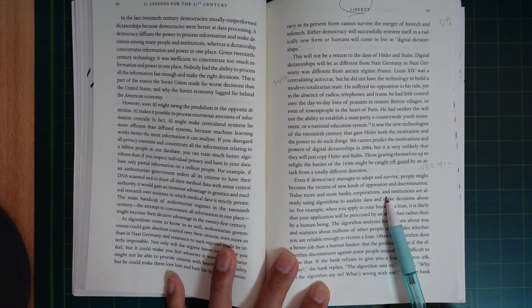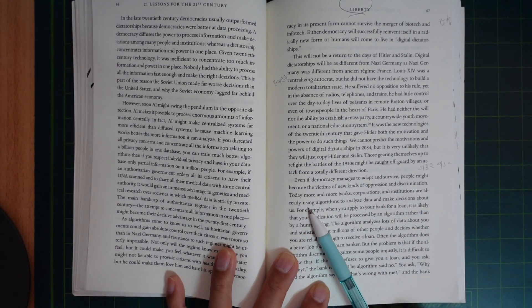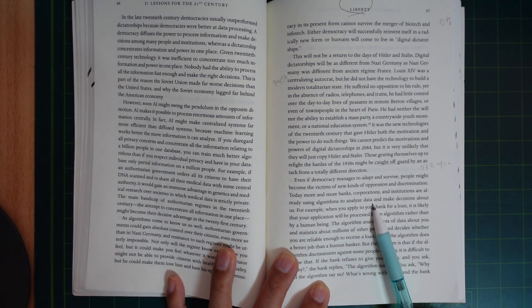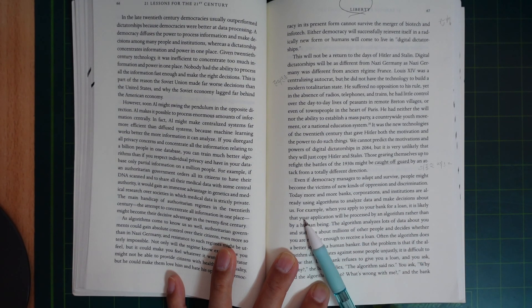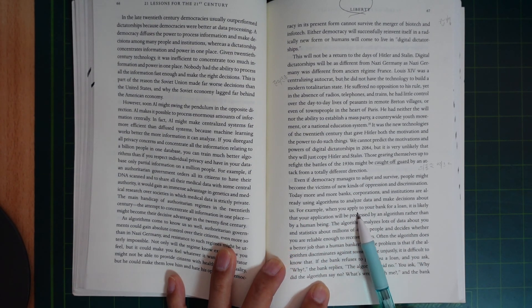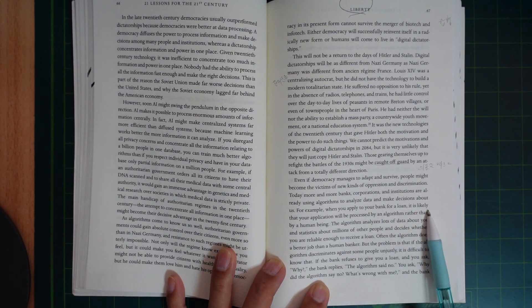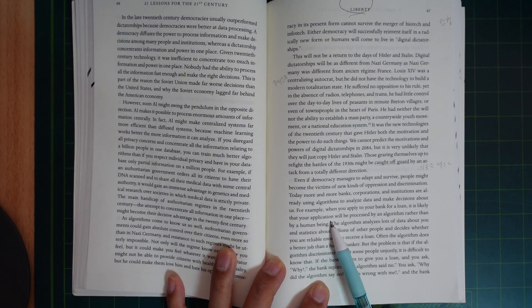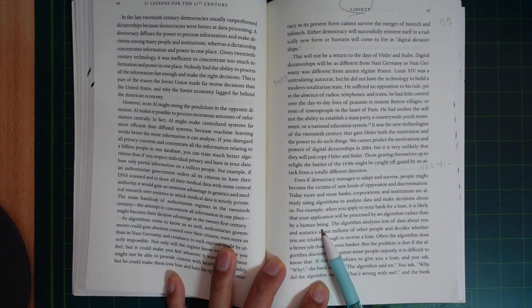Today, more and more banks, corporations, and institutions are using algorithms to analyze data and make decisions about us. For example, when you apply to your bank for a loan, it's likely that your application will be processed by an algorithm rather than by a human being.